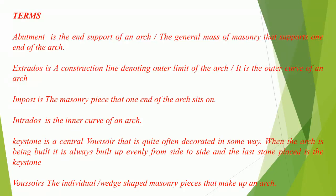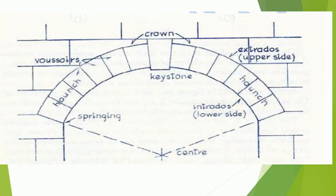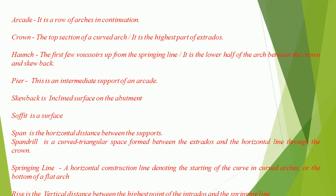Voussoirs are the individual wedge-shaped masonry pieces that make up an arch. Arcade is a row of arches in continuation. Crown is the top section of a curved arch; it is the highest part of the extradose. Haunch refers to the first few voussoirs up from the springing line; it is the lower half of the arch between the crown and skew back. Pier is an intermediate support of an arcade. Skew back is the inclined surface on the abutment.